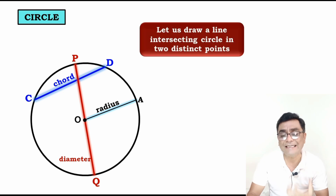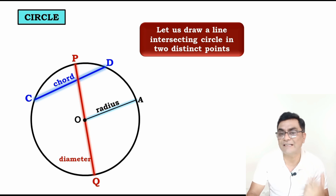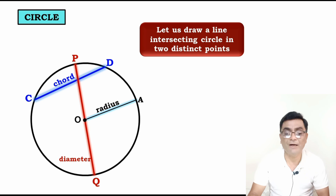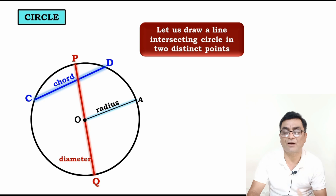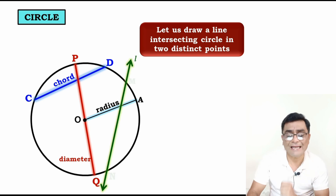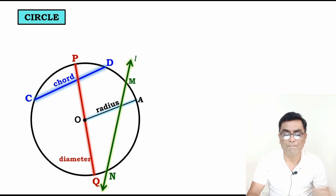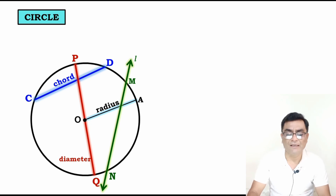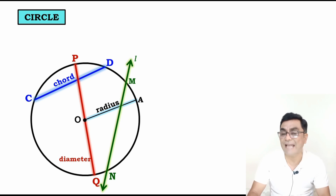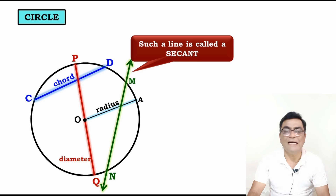Now let us draw a line intersecting a circle in two distinct points. Line L passes through circle at points M and N. Segment MN is a chord. But since it extends on both sides, it is a line. Such a line is called a secant.